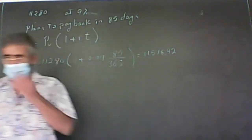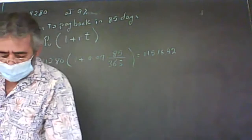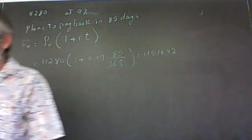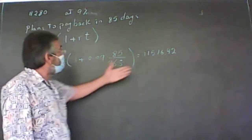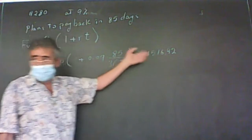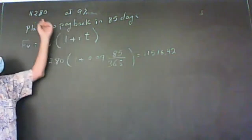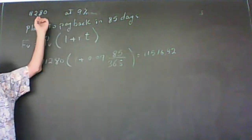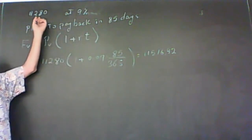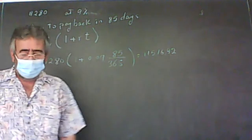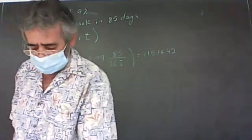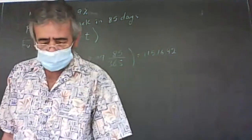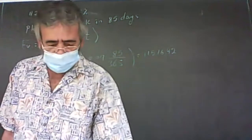So the maturity value is $11,516.42. The interest paid for this problem would be that amount minus the original $11,280.